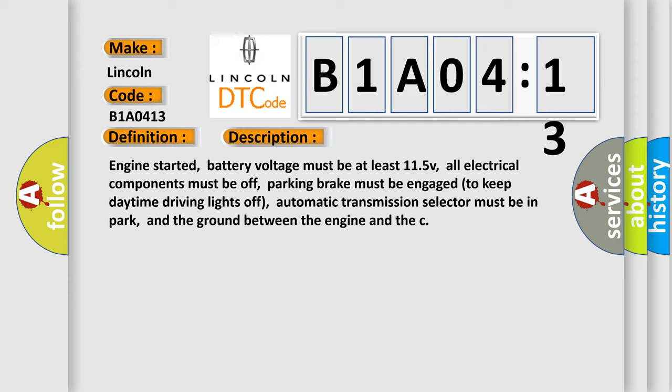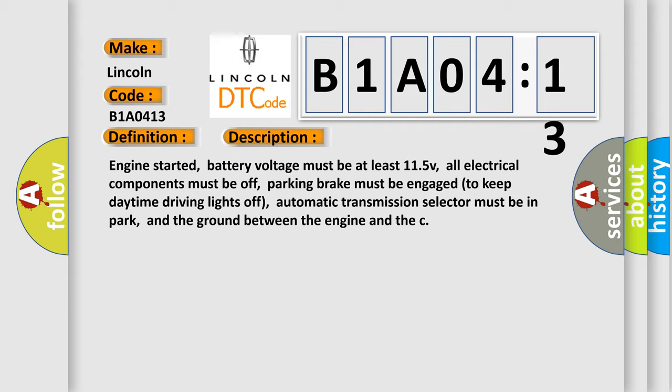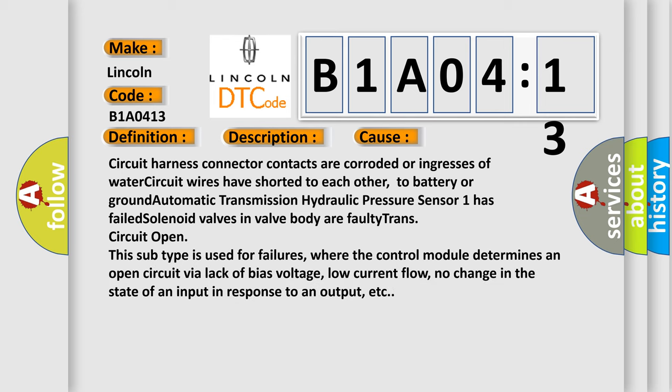This diagnostic error occurs most often in these cases: circuit harness connector contacts are corroded or ingresses of water, circuit wires have shorted to each other, to battery or ground, automatic transmission hydraulic pressure sensor one has failed, solenoid valves in valve body, a faulty trans circuit open. This subtype is used for failures where the control module determines an open circuit via lack of bias voltage, low current flow, no change in the state of an input in response to an output, etc.